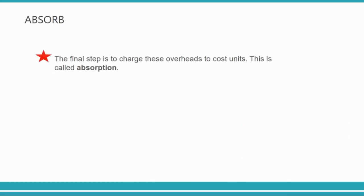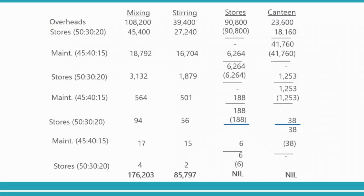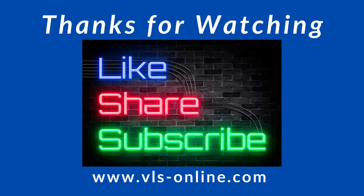The final step is to charge these overheads to cost units — this is called absorption. With mixing at one hundred seventy-six thousand and stirring at eighty-five thousand, you calculate the number of hours worked in each department and divide to get an OAR. For example, three dollars per hour in mixing and two dollars per hour in steering. If a product takes one hour in mixing and one hour in steering, you add three plus two — five dollars of overhead to that product.